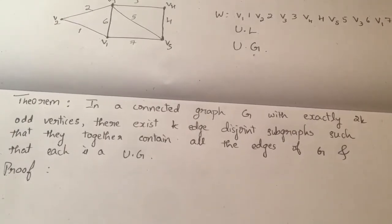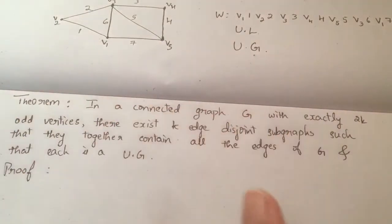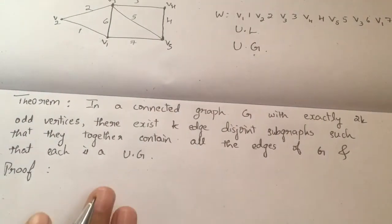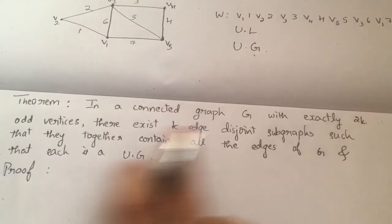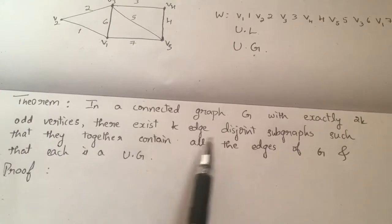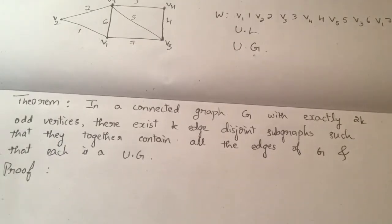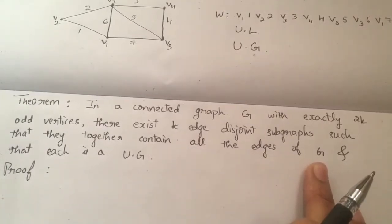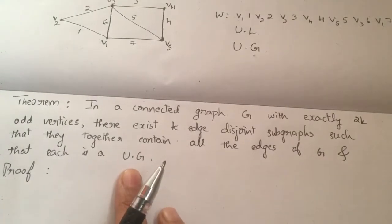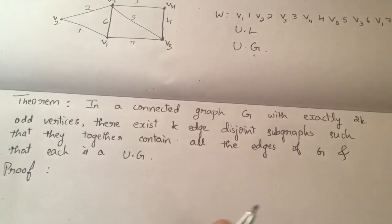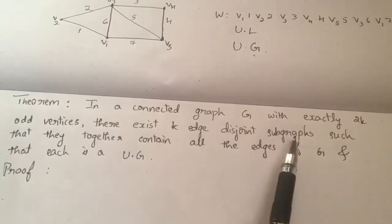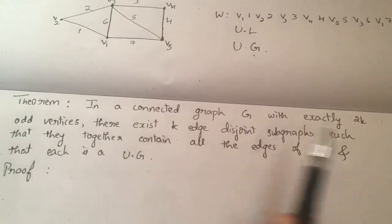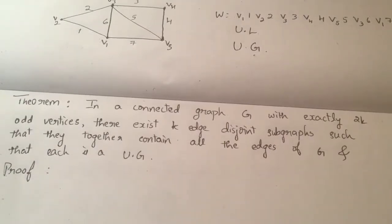How do we prove this? This statement may look difficult but it is quite easy. You have a connected graph with an even number of odd vertices, that is 2k odd vertices. Then there exist k edge-disjoint subgraphs such that each of them contains all the edges of G and each is a Unicursal graph, meaning each has got a Unicursal line.